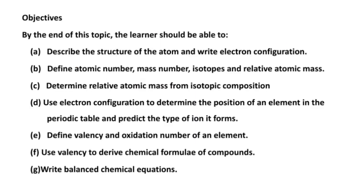Objectives of this topic: By the end of this topic, the learner should be able to define the structure of the atom and write the electron configuration. Define atomic number, mass number, isotopes, and relative atomic mass. Calculate relative atomic mass from isotopic composition. Use electron configuration to determine the position of an element in the periodic table and predict the type of ion it forms. Define valency and oxidation number of an element. Use valency to derive chemical formulae of compounds. And finally, write balanced chemical equations.